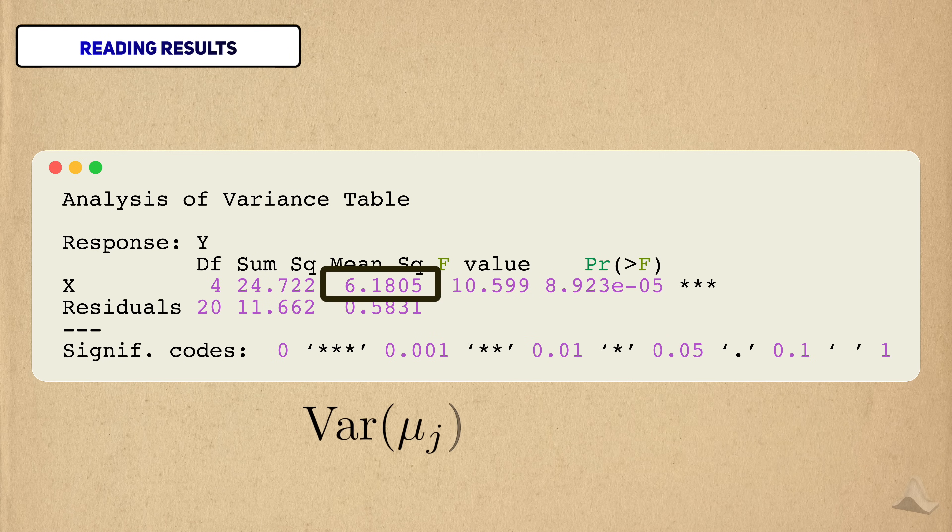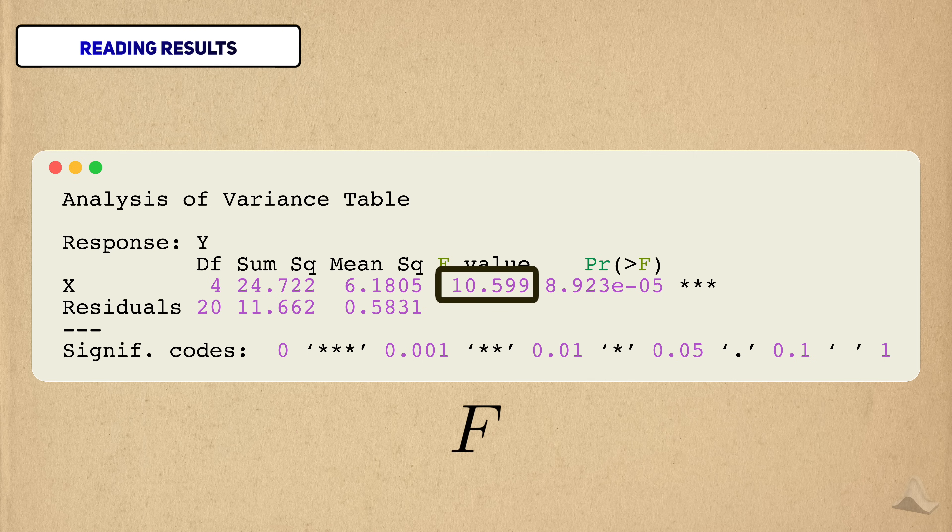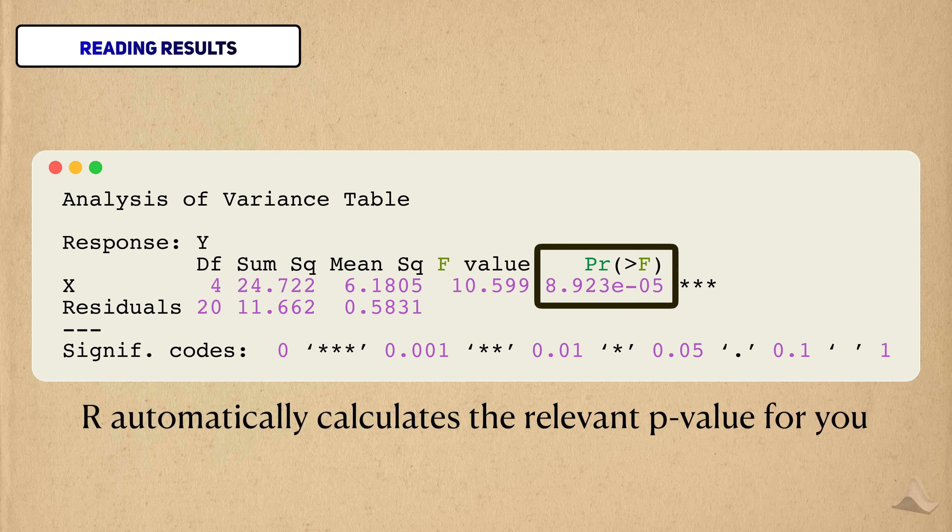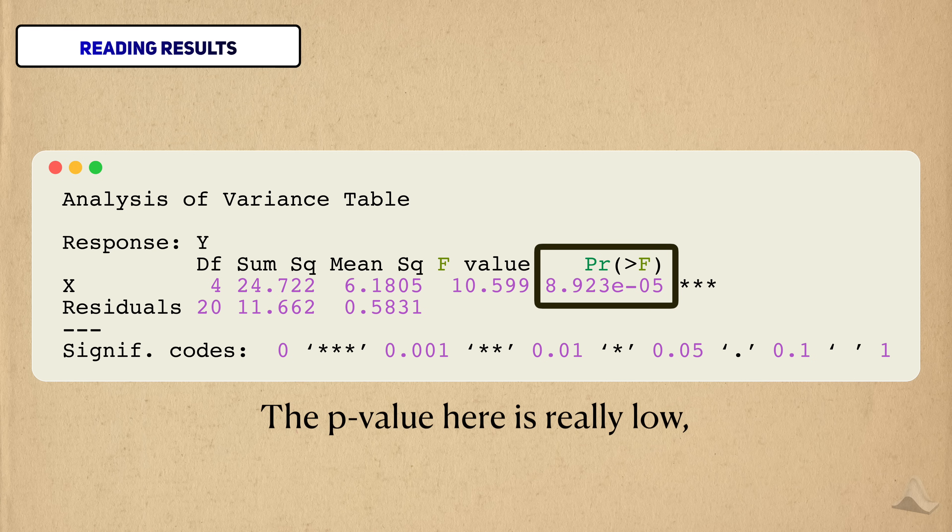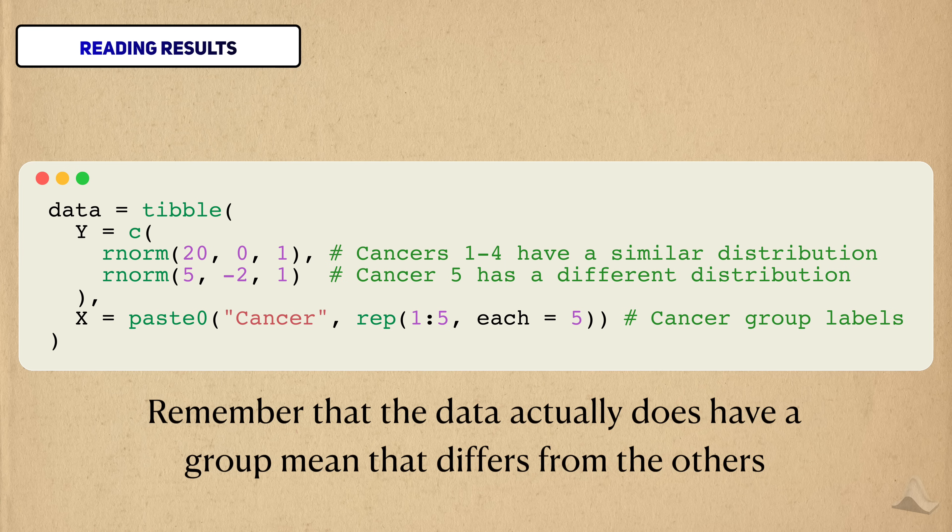This term is the variance in the group means, while this term is the variance in the data. The value for the F-statistic can be found here, R automatically provides the p-value for the test statistic right next to it, under this notation here. We can see that the p-value is really small, so we would reject the null hypothesis at a 5% significance level. This makes sense, given that one of the group means was simulated to be different from the others.